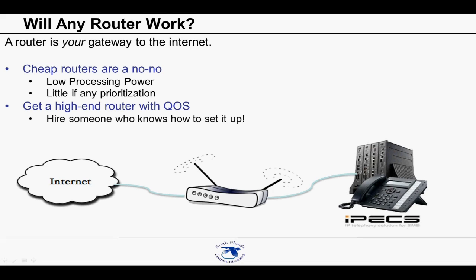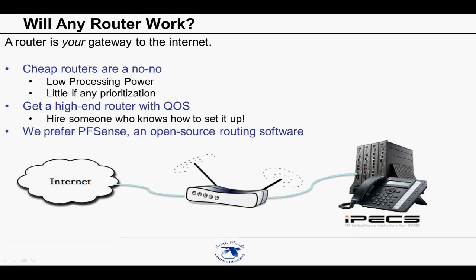Just as important as buying a quality router is the need for someone who knows how to set it up. You'd be surprised at how many IT techs have a difficult time with this. Cisco, SonicWall, WatchGuard, and others make some top-notch routers. At North Florida Communications, one of our favorite routers is an open-source product called PFSense. We found that PFSense works very well with voice-over-IP traffic. Since it's an open-source product, you do not have to purchase the software and can use the money saved to invest in some good hardware. For more information on PFSense, visit pfsense.org.